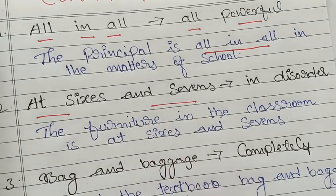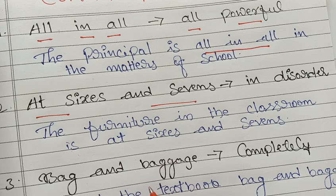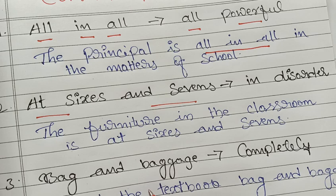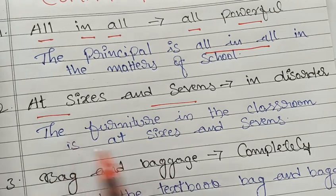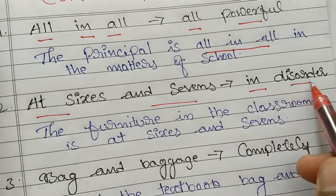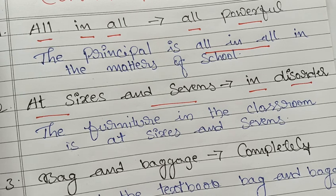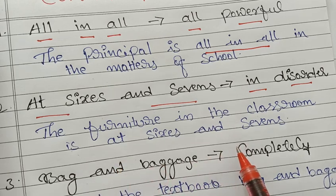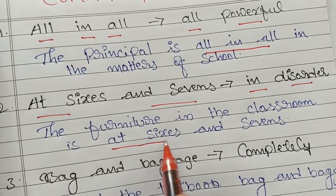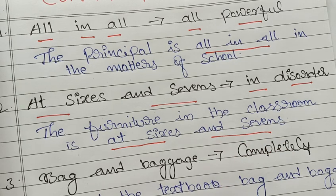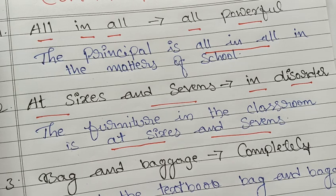The second phrase is 'at sixes and sevens.' You may think it refers to the sixes hit by a cricketer, but the meaning of this phrase is 'in disorder.' When you want to indicate that someone or something is in disorder, you use this phrase. See the example: 'The furniture in the classroom is at sixes and sevens.'